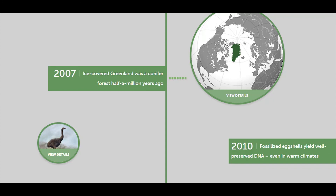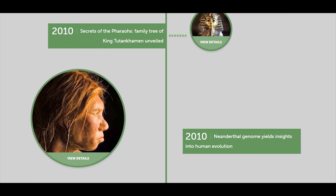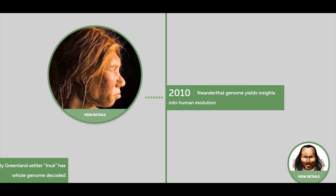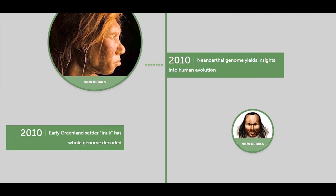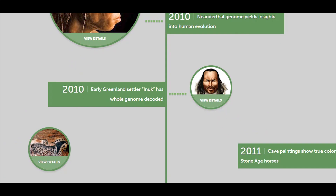In 2007, ice-covered Greenland was revealed to have been a conifer forest half a million years ago. In 2010, fossilized eggshells yielded well-preserved DNA even in harsh climates. In 2010, the family tree of King Tutankhamun was unveiled. Also in 2010, the Neanderthal genome yielded insight into human evolution.